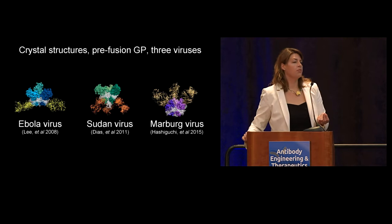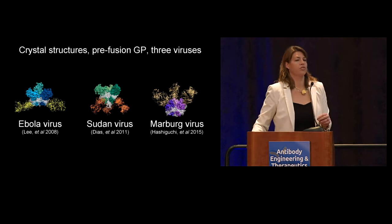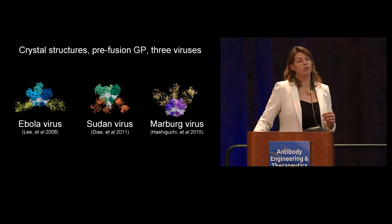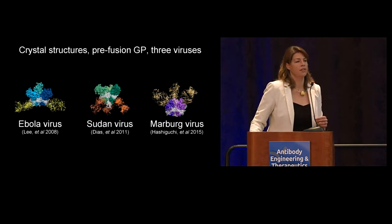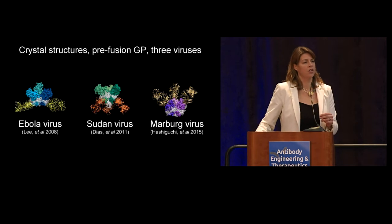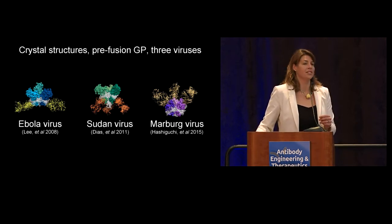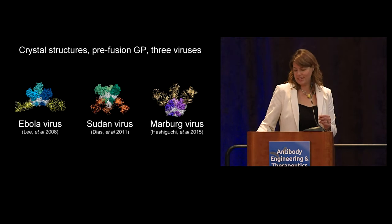My lab solved three crystal structures of filovirus GPs — from Ebola virus, Sudan virus (which until last year caused the largest outbreak of Ebola hemorrhagic fever ever), and Marburg virus — each one in complex with a different neutralizing antibody.